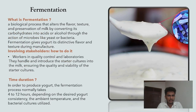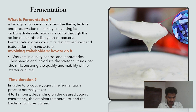Fermentation is the biological process that alters the flavor, texture, and preservation of milk, converting its carbohydrates into acids through the action of microbes like lactobacteria. Fermentation gives yogurt its distinctive flavor and texture during manufacture. The quality control team are the main stakeholders in this stage; the time required is typically 4 to 12 hours.